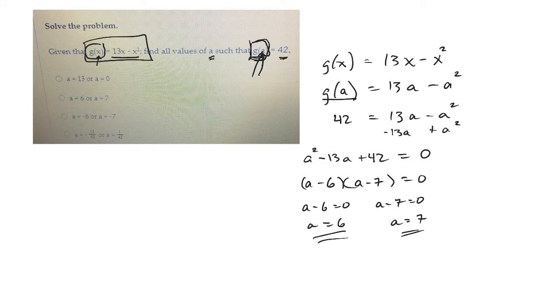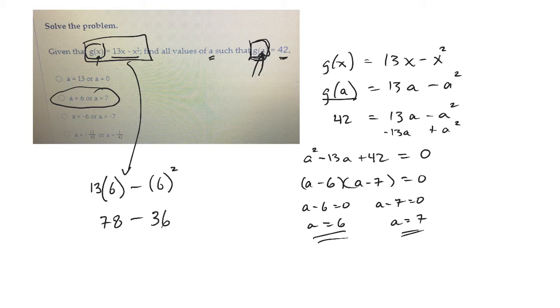I'm picking that one. We could test that, too. We could test that and just plug in the function. So 13 times 6 minus 6 squared. So 13 times 6 is 78. Minus 6 squared is 36. So if you subtract those two, sure enough, you get 42.